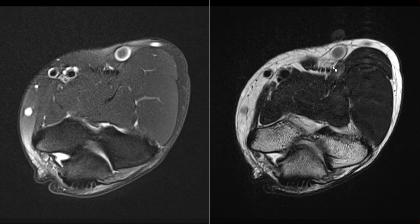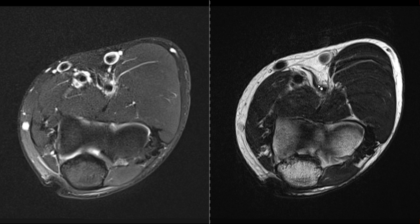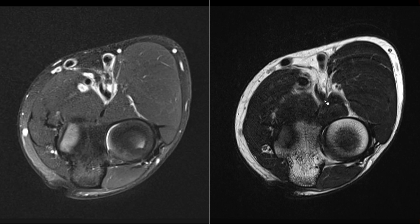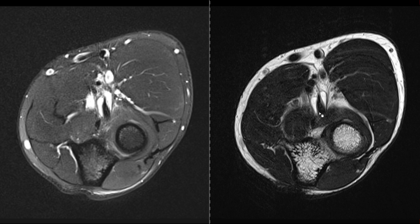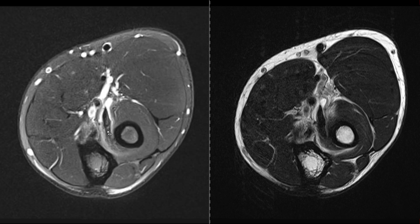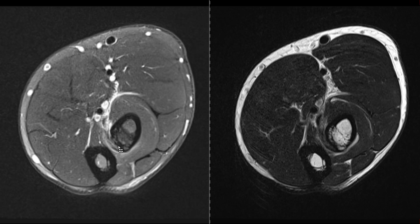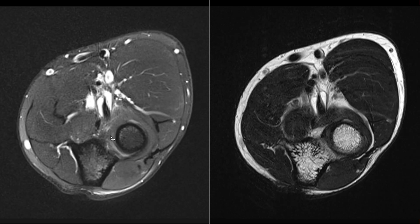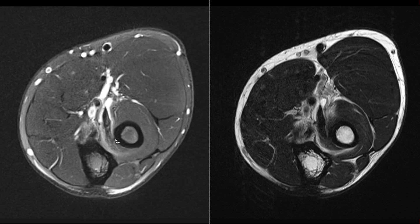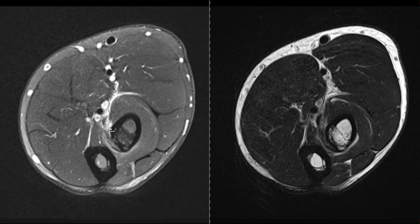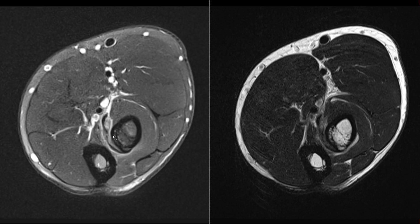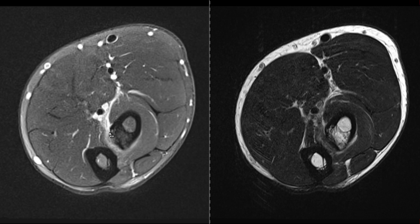Starting proximally on the axial views, we have the two components — the long head and the short head — as well as the lacertus fibrosus, which is intact. There is fluid around the tendon, better depicted on this fat-saturated sequence. Following the tendon distally, there are signal changes and only some fibers are inserting into the radial tuberosity. Clearly the long head is also partially torn, and there is complete discontinuity of the short head, which is completely absent here.